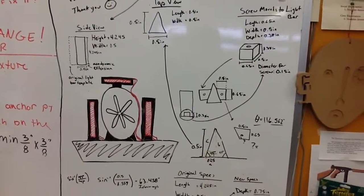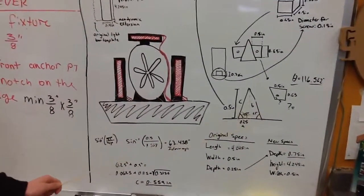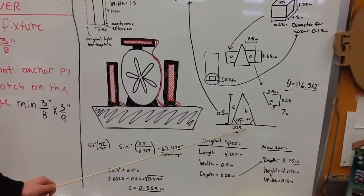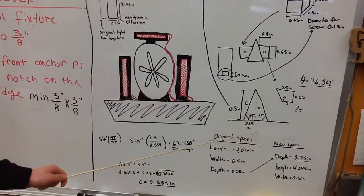When we were going to make the triangle, we thought we had to figure out the angles of each side because we knew the height and the base. We knew the height was half an inch and the base is half an inch.